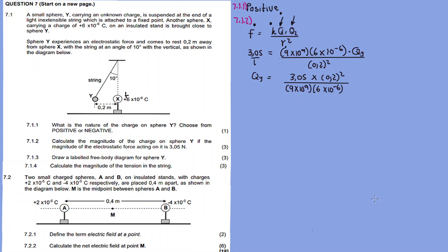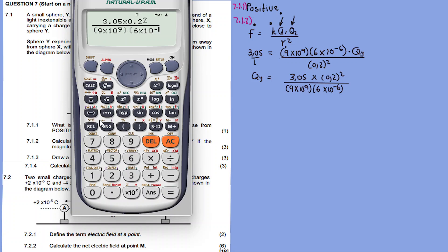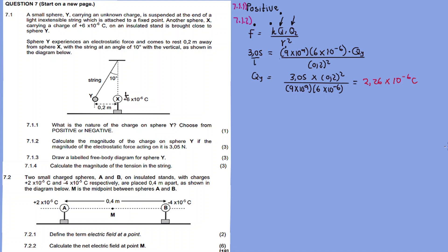Now let's calculate. It's 3.05 times 0.2 squared, divided by 9 times 10 to the exponent 9, multiplied by the charge of X. The answer is 2.26 times 10 to the exponent minus 6 coulombs for charge Y.